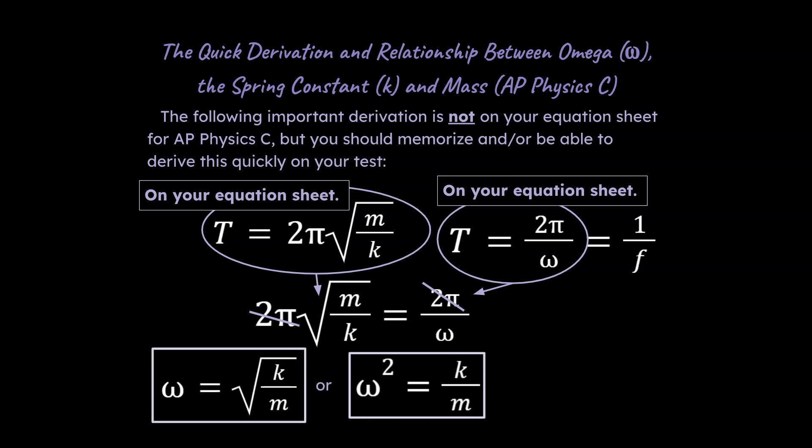and we're left with ω is equal to the root of k over m, or ω² is equal to k over m, and this is really crucial because a lot of oscillation problems just assume that you know this.